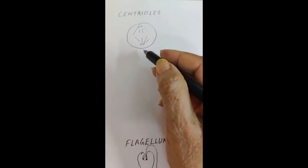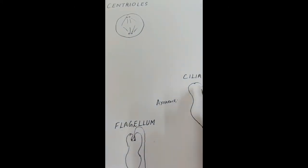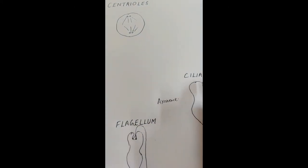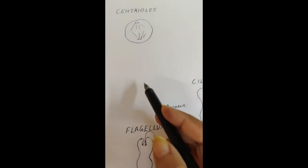So today we are going to see how to draw the centrioles, the ultra structure, as well as the inner parts of cilia and flagellum and their ultra structure.